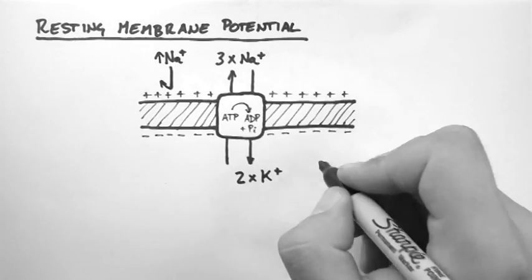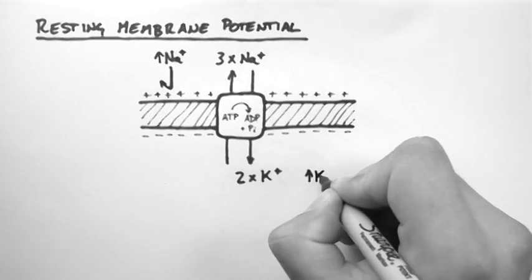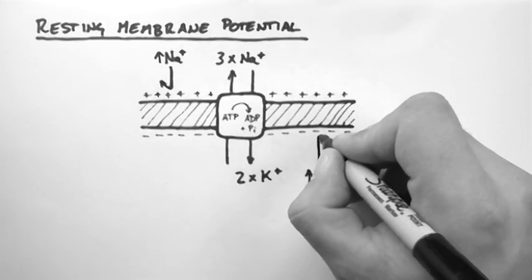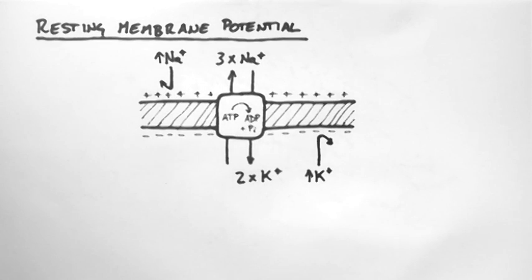Similarly there is a high concentration of potassium in the cell and a lower concentration outside the cell. So it would like to move down its concentration gradient too, but can't because of the membrane.